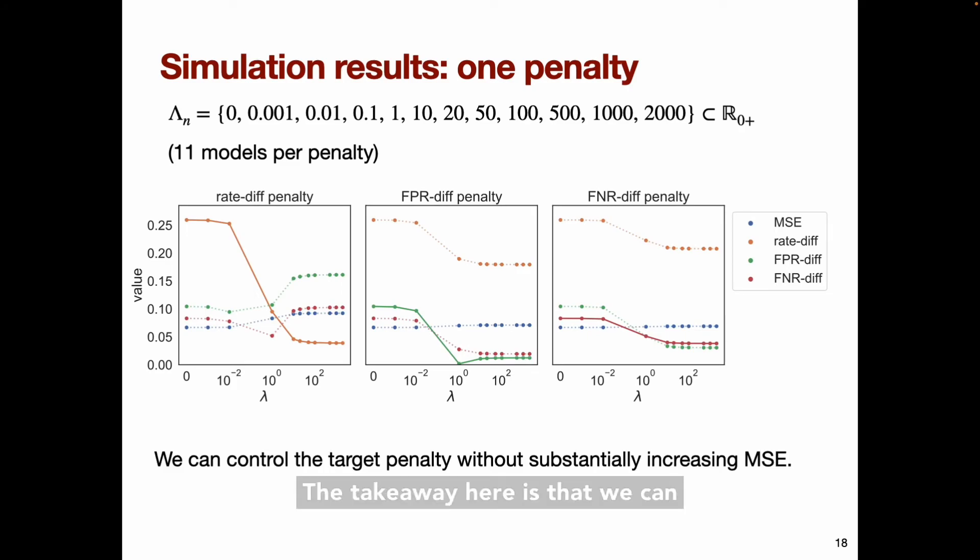So the takeaway here is that we can control the target penalty without a substantial cost in the error rate.